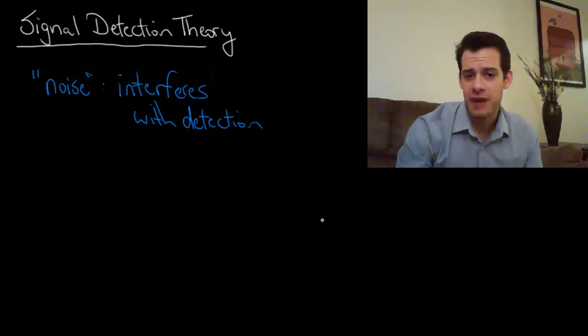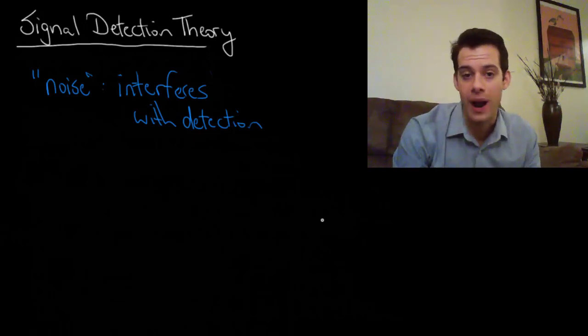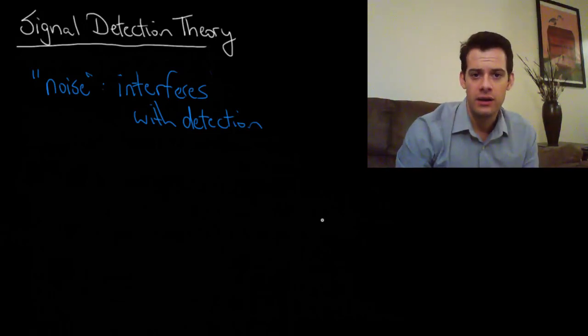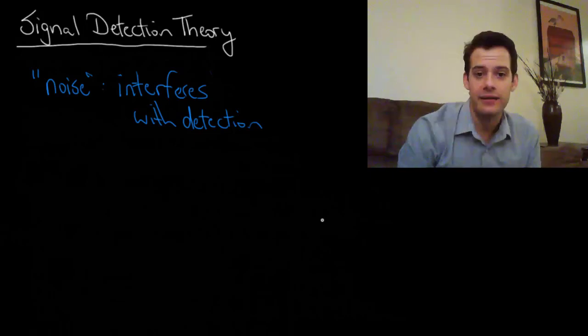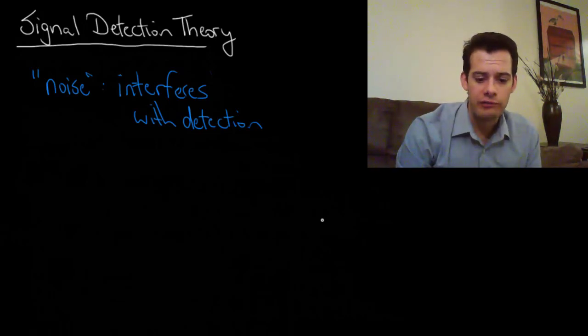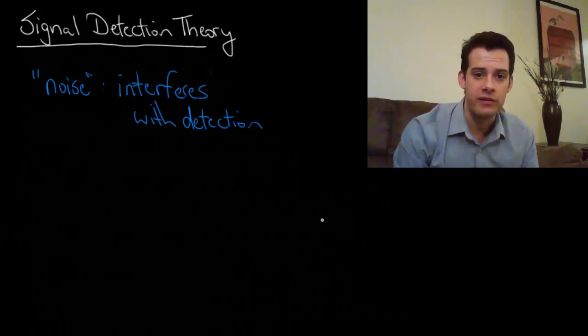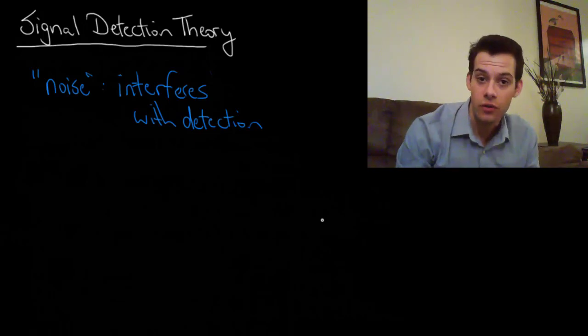If you think about trying to measure your absolute threshold for hearing, you can imagine that I want to find the quietest sound that you can hear. I'm going to have other noise that gets in the way. And even if I put you in a soundproof room, we're still going to have a problem with noise because there's no such thing as a perfectly quiet environment. As soon as you get into that quiet room, you're going to realize that there's air in the room and there's air molecules moving around and some of those are going to hit your eardrums.